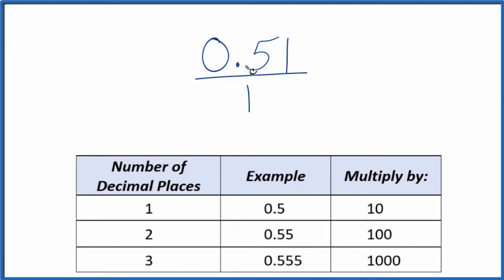What we'd like to do is get this 0.51 to be a whole number, and we have two decimal places. Two decimal places? Let's multiply the numerator by 100. So 100 times 0.51, that just equals 51, and now we have a whole number.